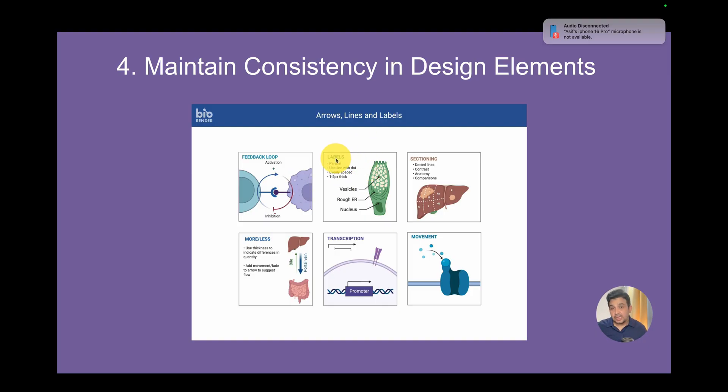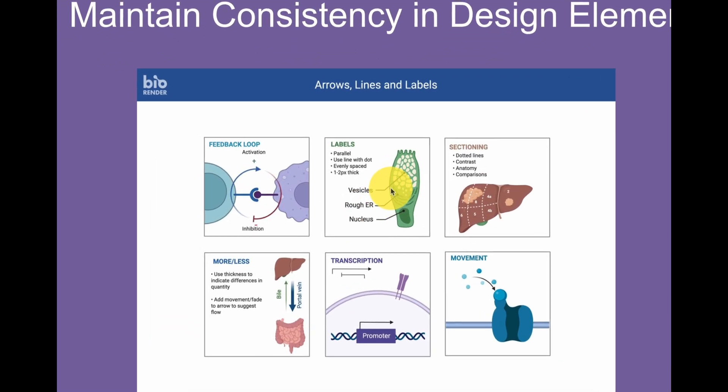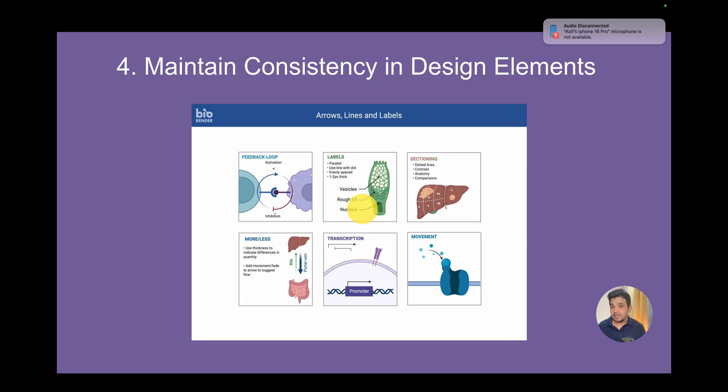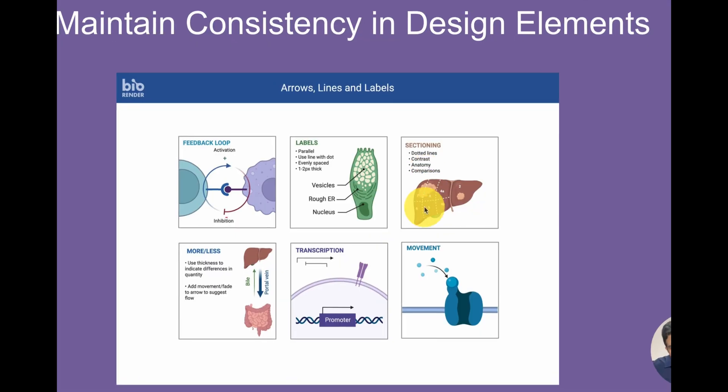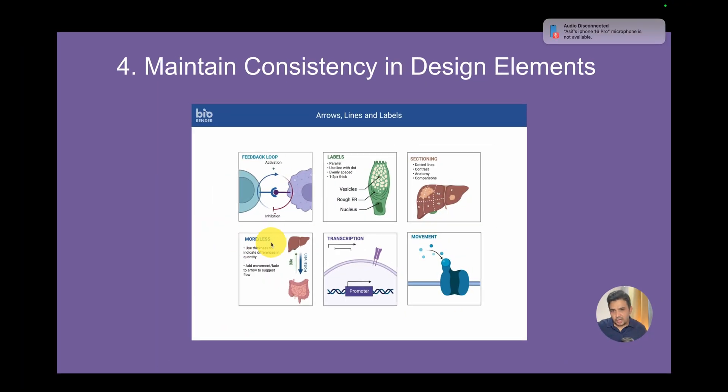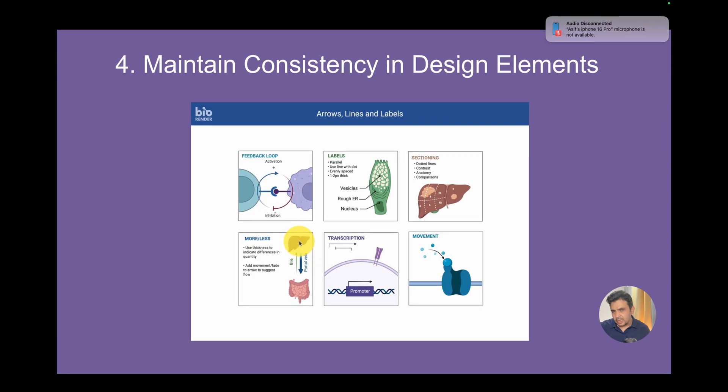How we can draw different labels: the size and style of this label is similar. I'll be recording a separate video on how to design graphical abstracts in BioRender. Here is the sectioning. We can draw a dashed line and divide into different components. Here is more or less.